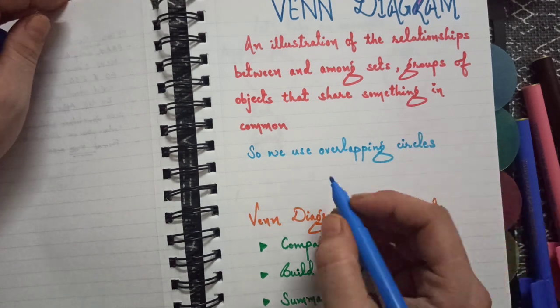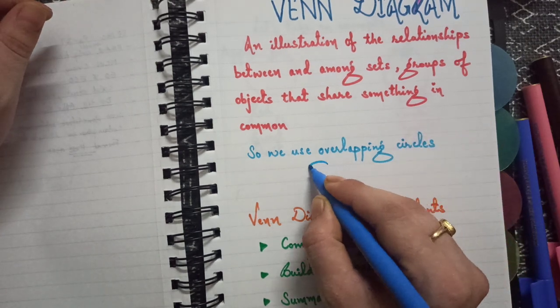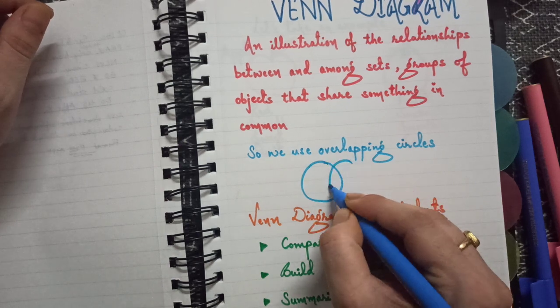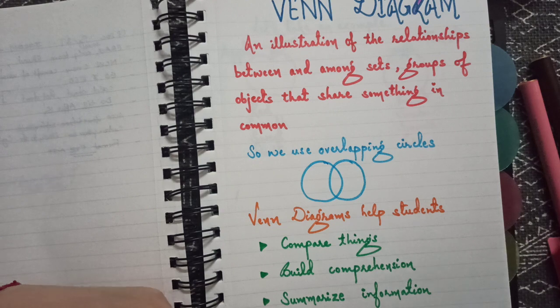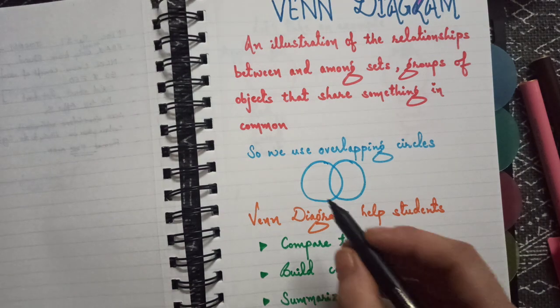What are Venn diagrams? Venn diagrams are nothing but two circles that overlap each other. Let me give you another example - one circle and another circle, these two circles overlap each other.